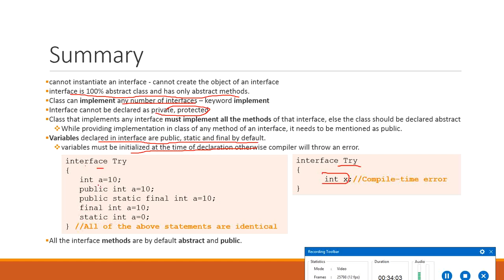All these variable declarations are identical in an interface: 'int a', 'public int a', 'public static final int a', 'final int a', 'static int a' — all are the same because variables are implicitly public, static, and final. Similarly, all interface methods are by default abstract and public. So 'int a = 10' without specifying public static final is still implicitly public static final.